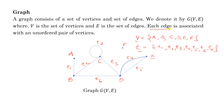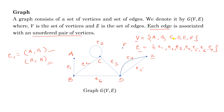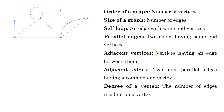Each edge is associated with an unordered pair of vertices. For example, E1 can be written as (A, B) or (B, A) because no direction is given — that's why we say each edge is associated with an unordered pair of vertices. Looking at this graph, the cardinality of V is 6 and the cardinality of E is 7.